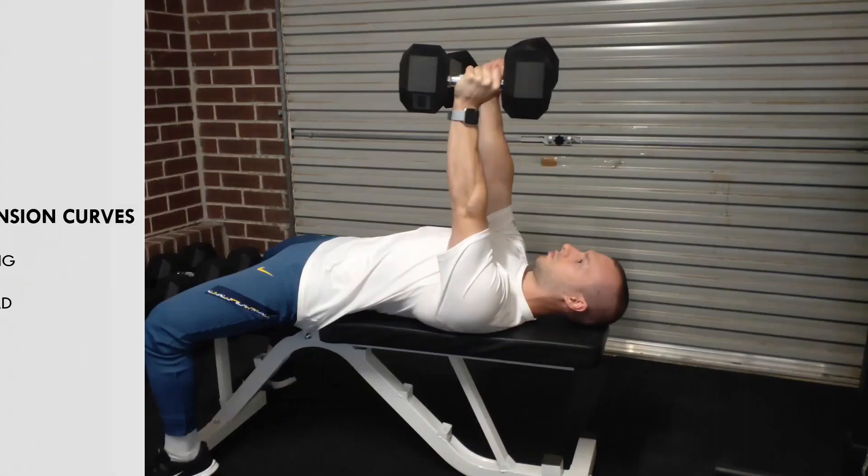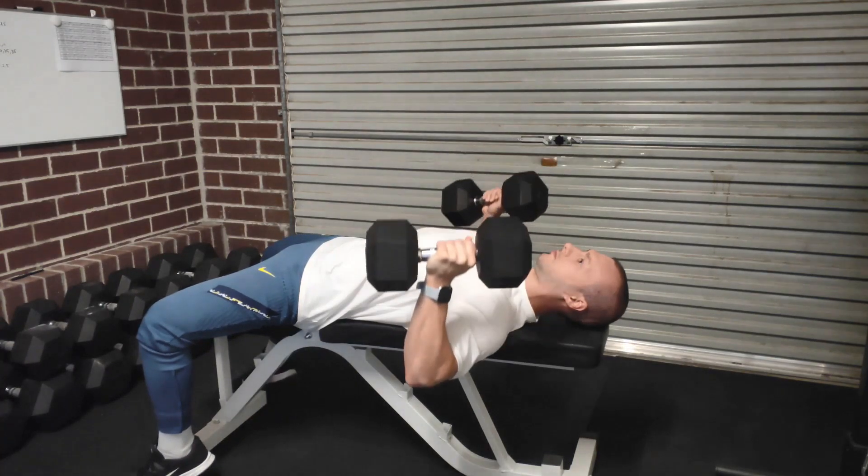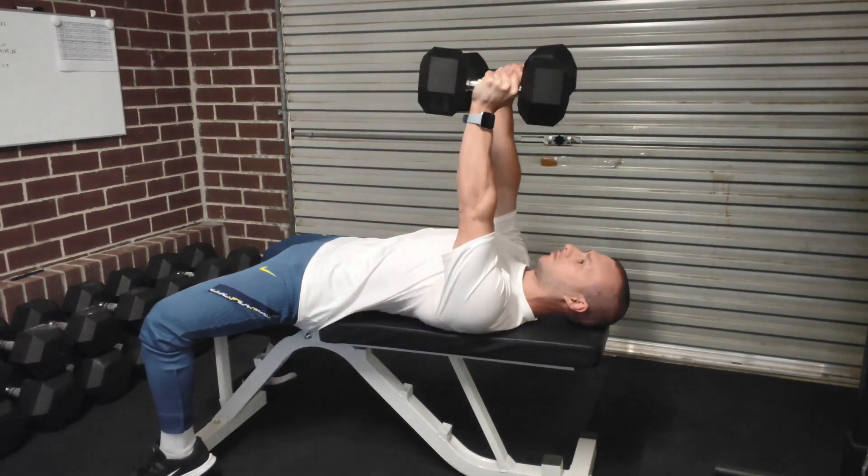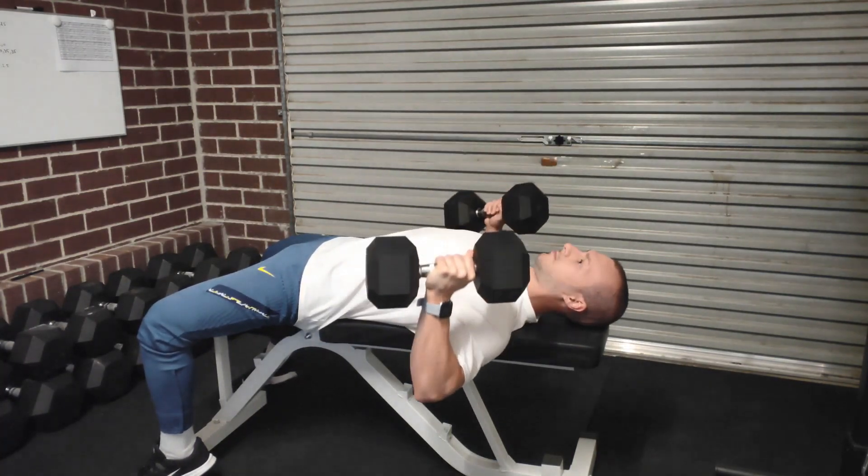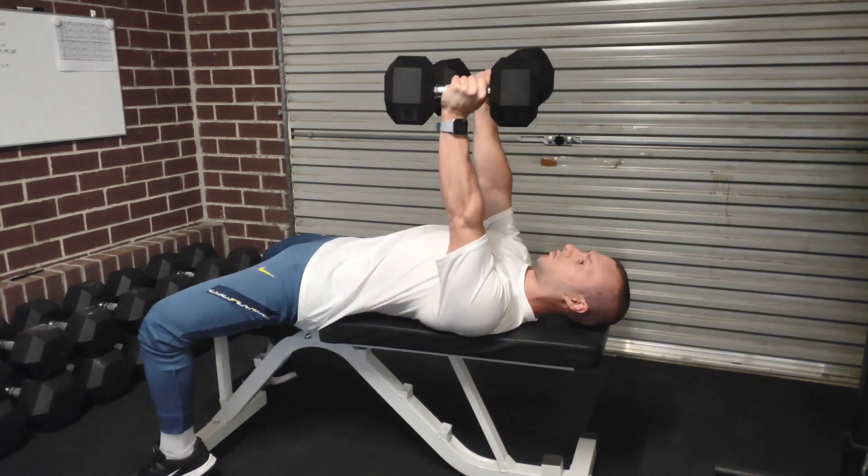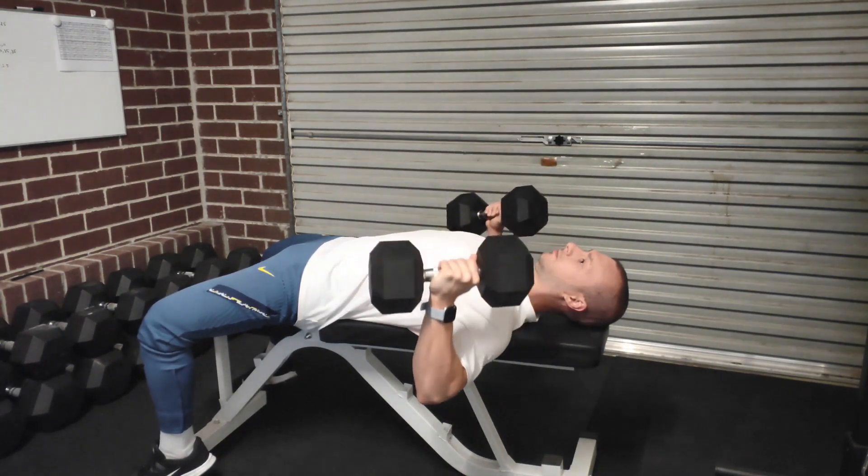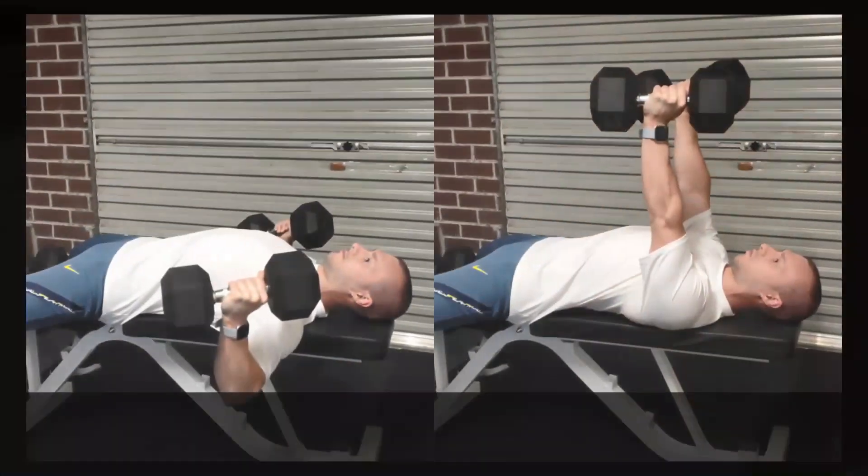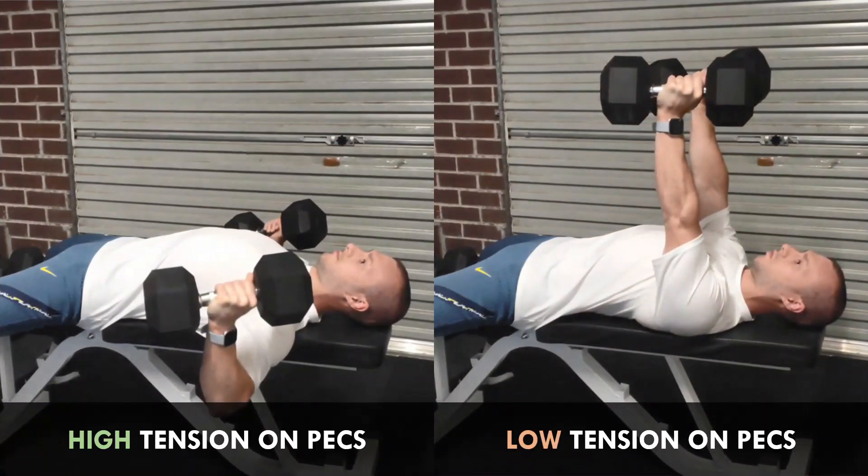For the first example let's use a dumbbell fly. The dumbbell fly is a fine exercise to isolate the chest however it involves a drastic tension curve from the start to end range. The dumbbell fly is hardest in the bottom position and easiest in the top position. This is because in the bottom range the full force of gravity is pushing the dumbbells down resulting in the pecs resisting the shoulders from horizontally extending behind the body. At the top position there is almost no tension on the pecs at all because the arms are extended and there is no lateral force for the pecs to horizontally flex against.